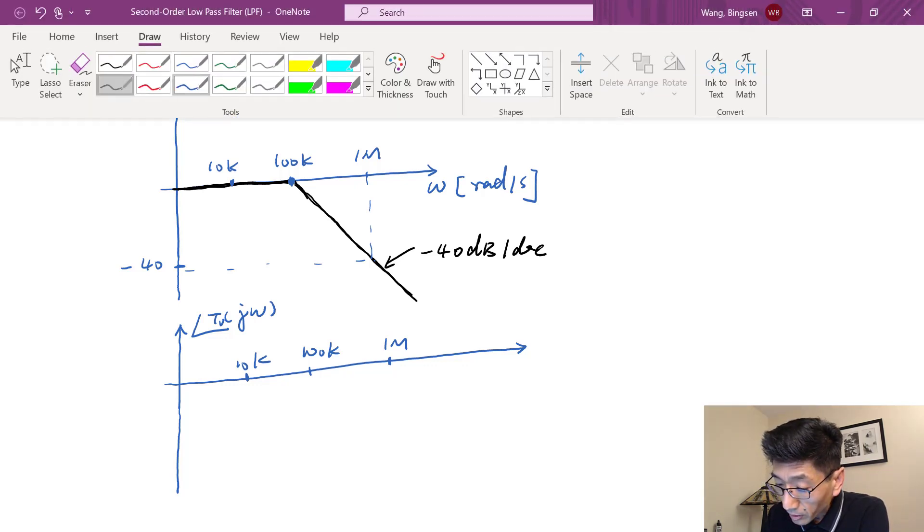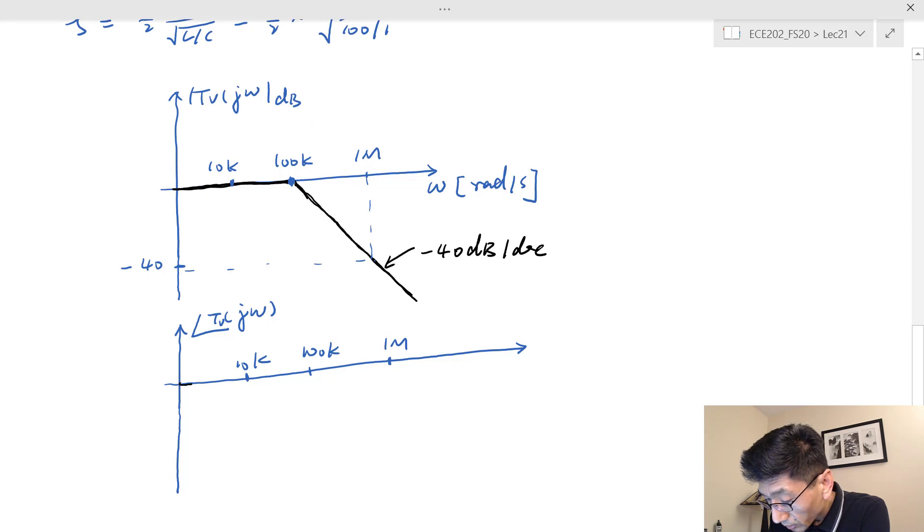For the gain here we are going to transition in two decades, so at higher frequency we get -180°. This transition for -180° is happening in two decades. In the middle at the resonant frequency we have -90°.